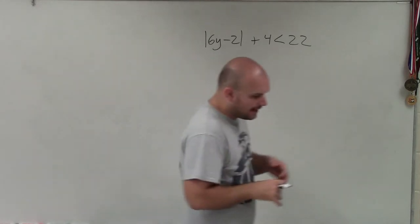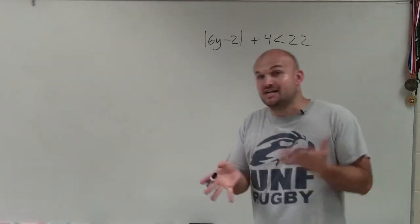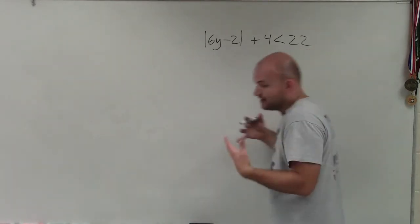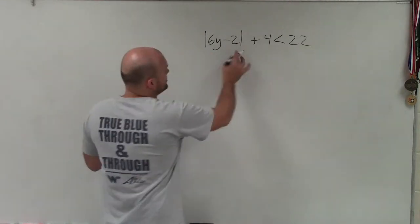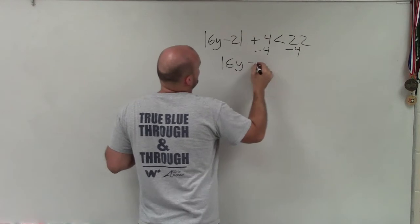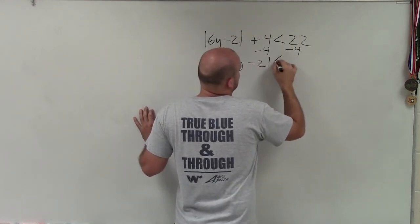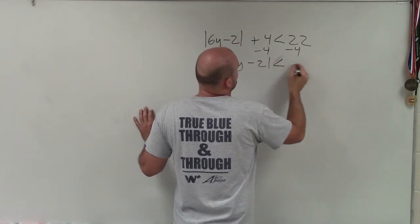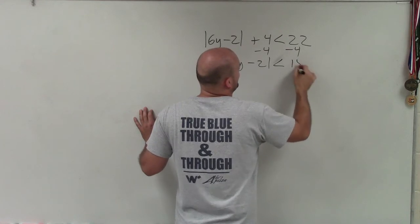When solving absolute value inequalities, what we need to firstly do is isolate the absolute value. We need to get the absolute value by itself. To do that, I'm going to subtract 4 on both sides. Therefore, I have the absolute value of 6y minus 2 is less than 22 minus 4, which is 18.